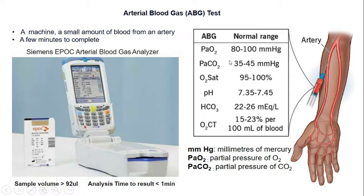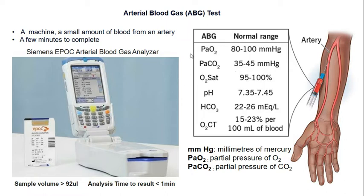The test results give you a lot of information and tell you how well your lungs are able to move oxygen into the blood and remove carbon dioxide from the blood. In healthy people, the partial pressure of oxygen ranges from 80 to 100 millimeters of mercury, and the partial pressure of carbon dioxide ranges from 35 to 45 millimeters of mercury.